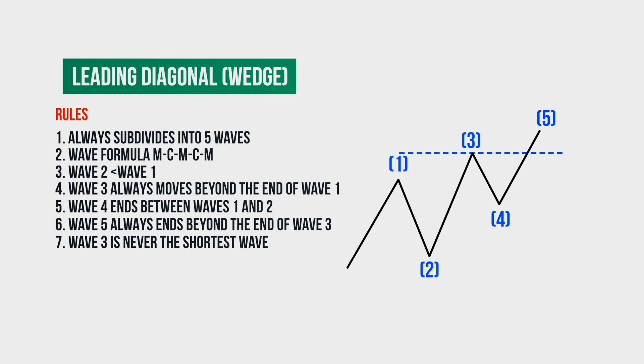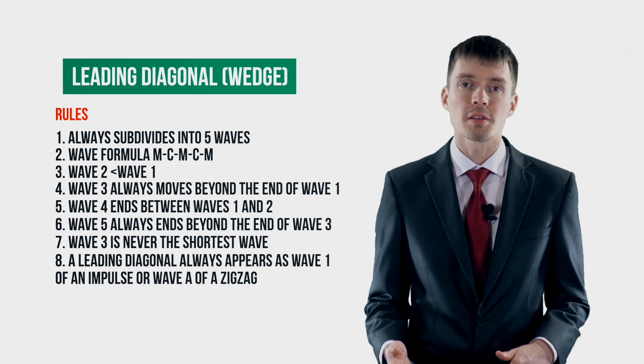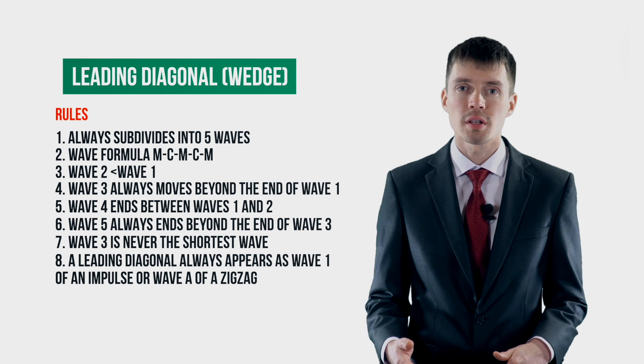Seventh rule, the third wave in the leading diagonal is never the shortest in comparison with waves one and five. And in conclusion, the leading diagonal appears in the wave one position of impulses and in the wave A position of zigzags. Now we have learned all the rules that are relevant for the leading diagonals.